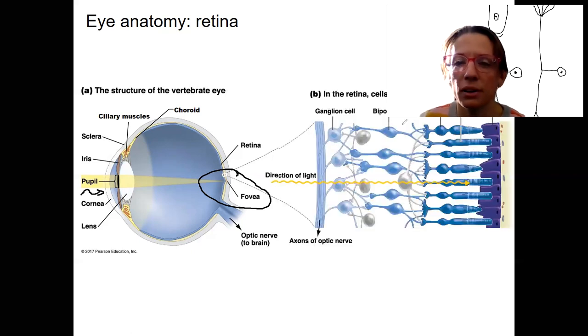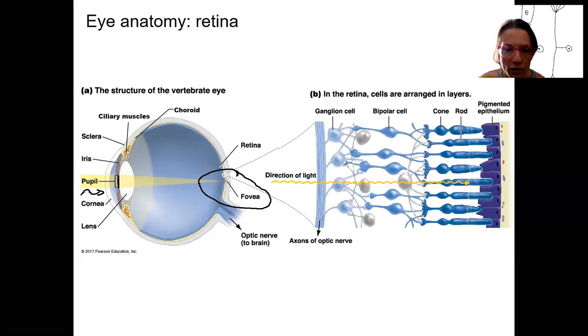So here is a zoom in picture of the retina. So we zoom in to this right here. This is what we see. This is the very back of the eye. So the choroid and sclera would be over here.